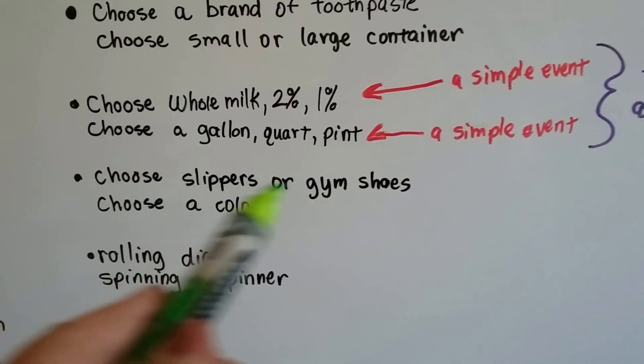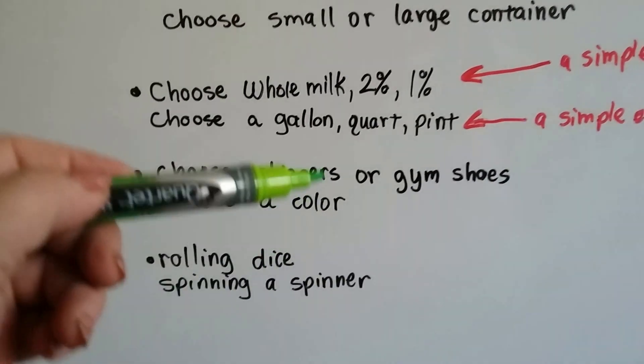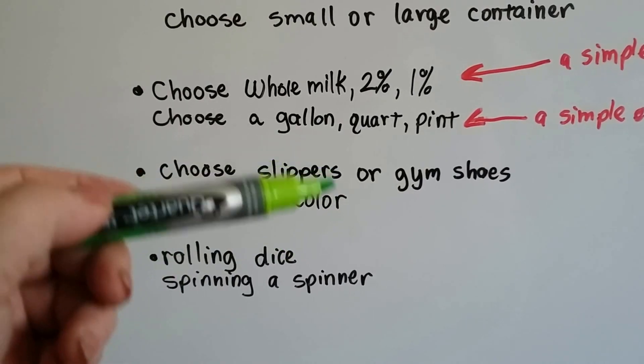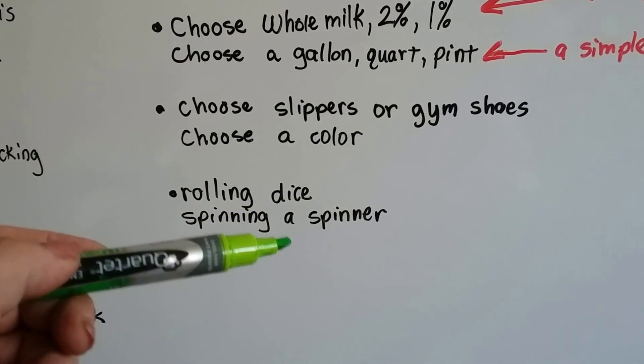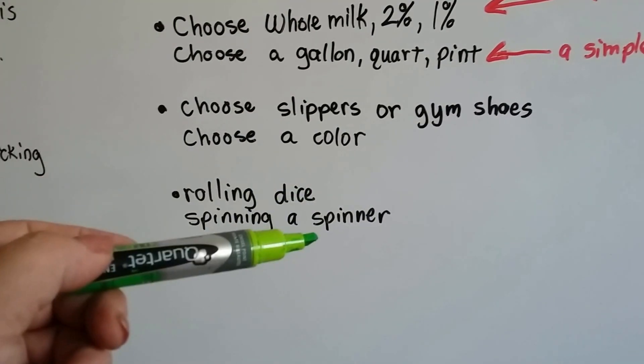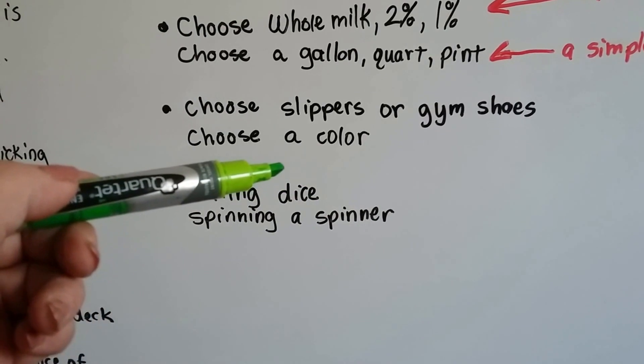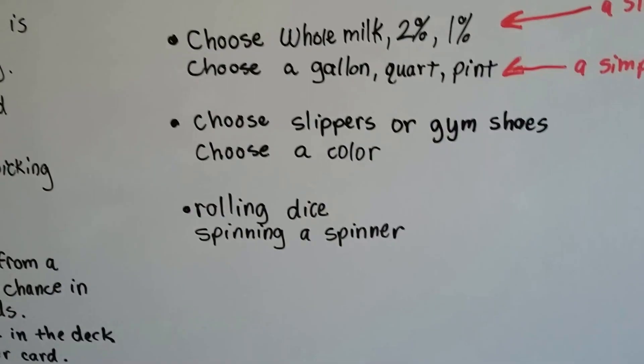Or if I choose slippers or gym shoes, and then I choose a color. That's a simple event. That's a simple event. But together they make a compound event, and they're independent of each other. Or if I roll dice and get a number and spin a spinner and pick a color. The dice doesn't help me pick the color, and the spinner doesn't help me pick a number on the dice. They're completely independent of each other. See? But they're both simple events.